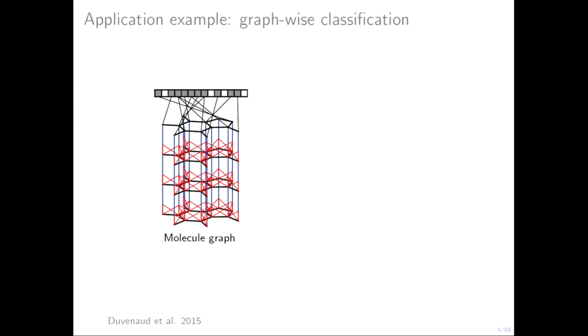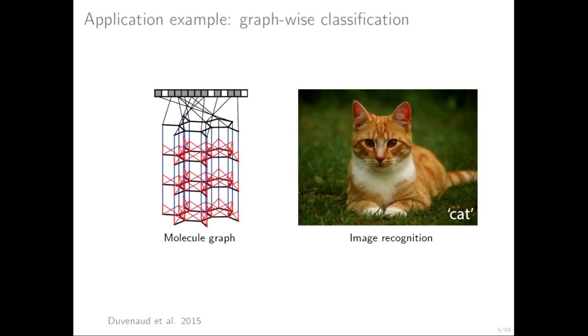Let me give an overview of different classes of problems we can encounter in this field, with analogies to computer vision. One application is graph-wise classification. If you think of a graph that models a chemical molecule, vertices will be atoms and edges represent chemical bonds. Here we want to predict some property of this molecule — for example, whether it will be toxic or not. We start with features on the nodes and aggregate them into a single vector representing the entire graph. In computer vision terms, this is like image recognition.